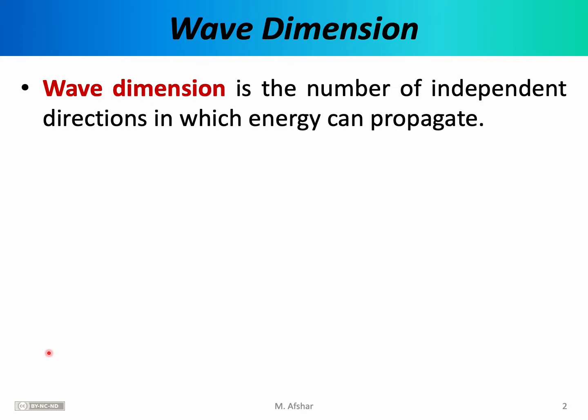In this lecture, we want to discuss a series of miscellaneous wave topics. One of those is wave dimension. Wave dimension is the number of independent directions in which energy can propagate. Recall that energy propagation is an important part of the wave concept. The wave speed tells us how fast energy propagates, and in our last lecture we calculated the exact amount of energy that a particular wave with a particular amplitude and angular frequency carries. Now the question is: where does that energy go? In which direction does it propagate?